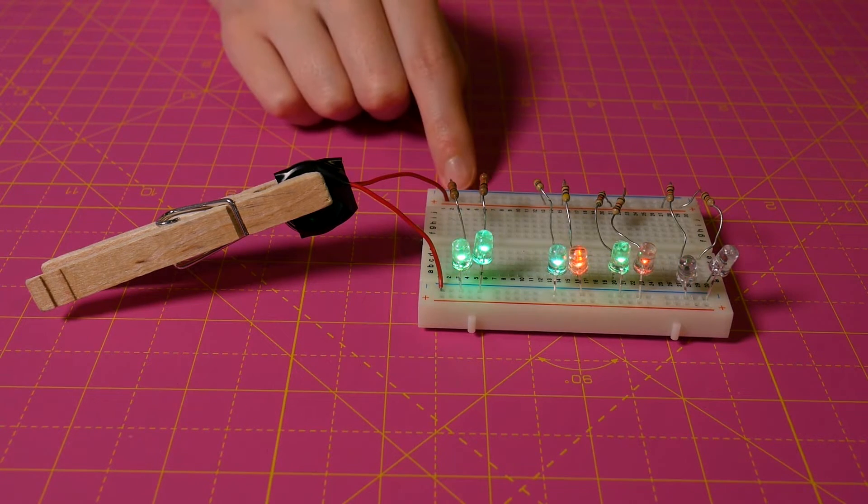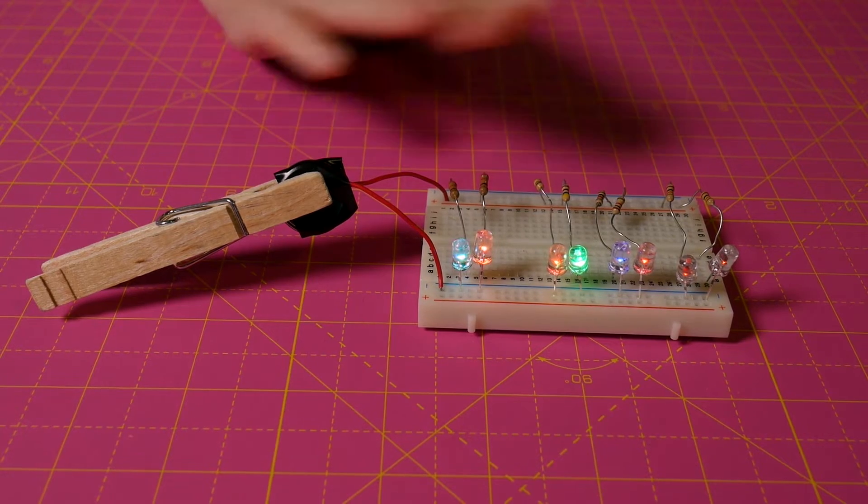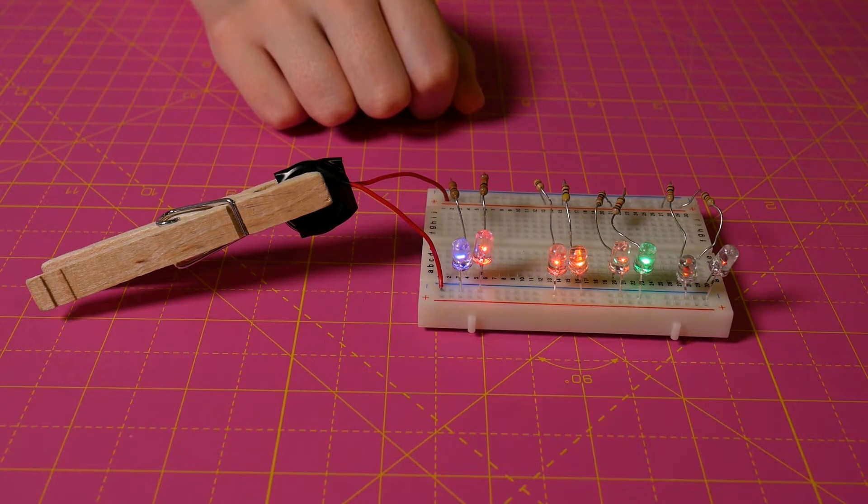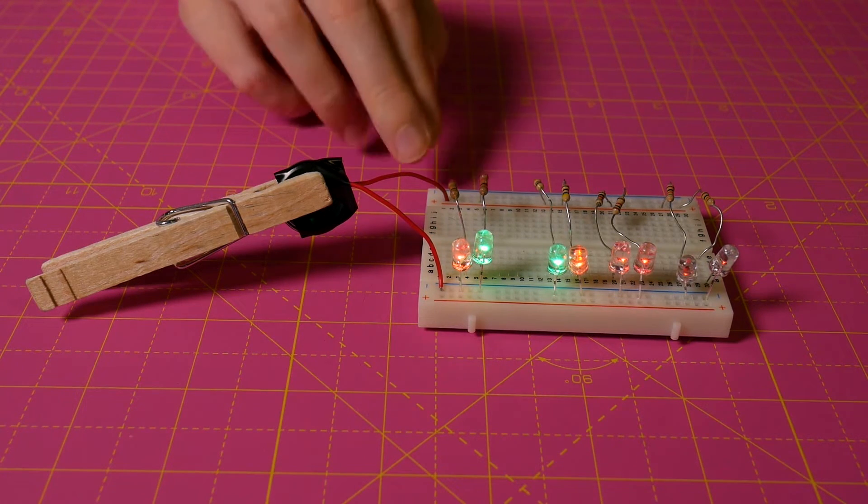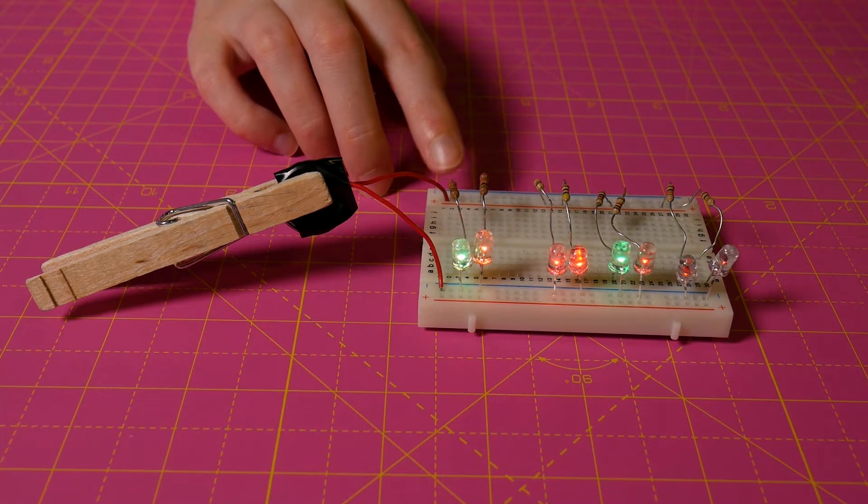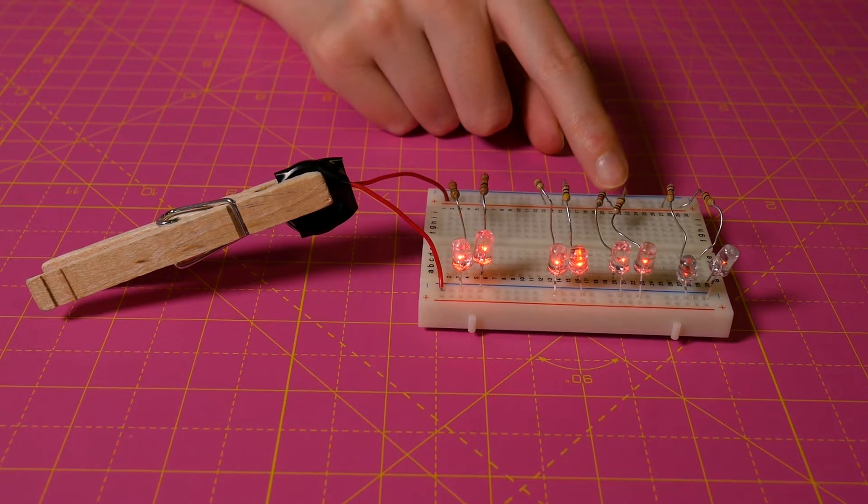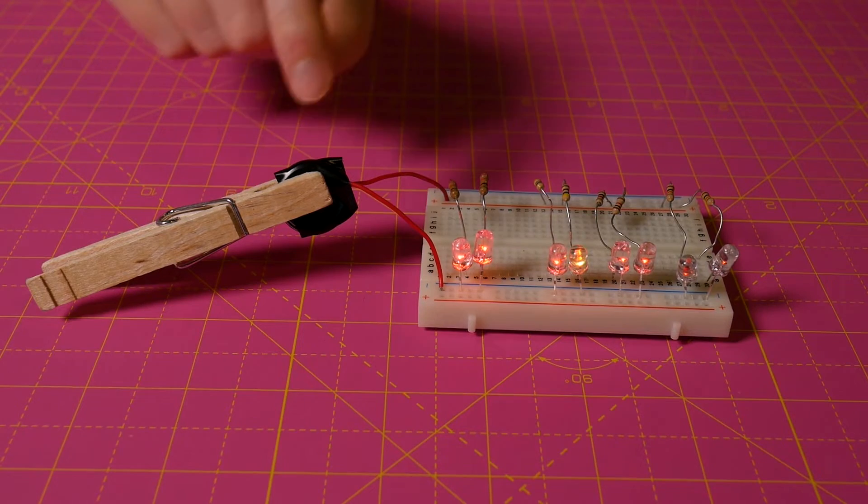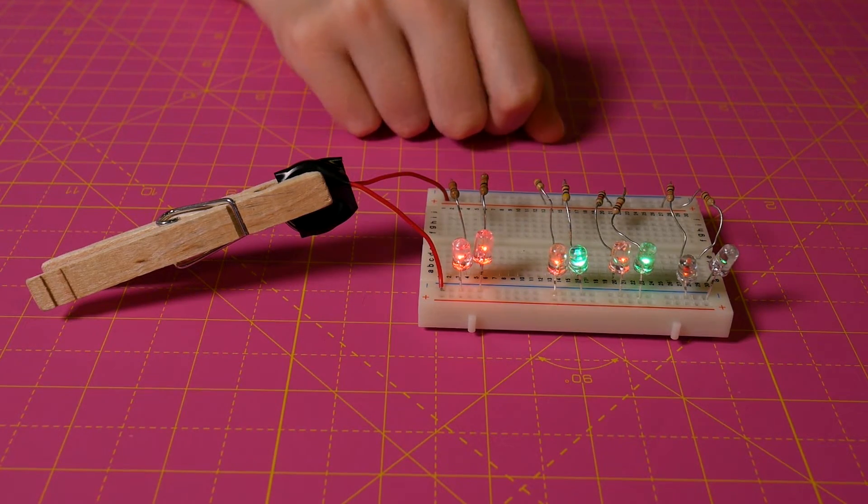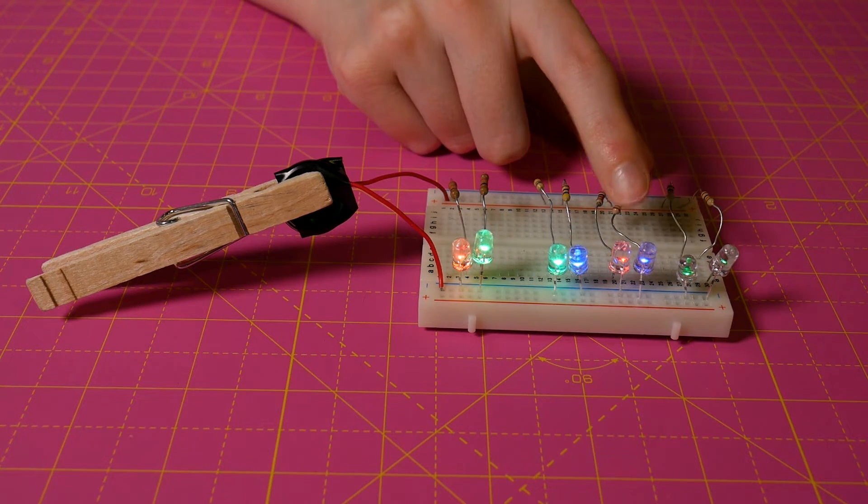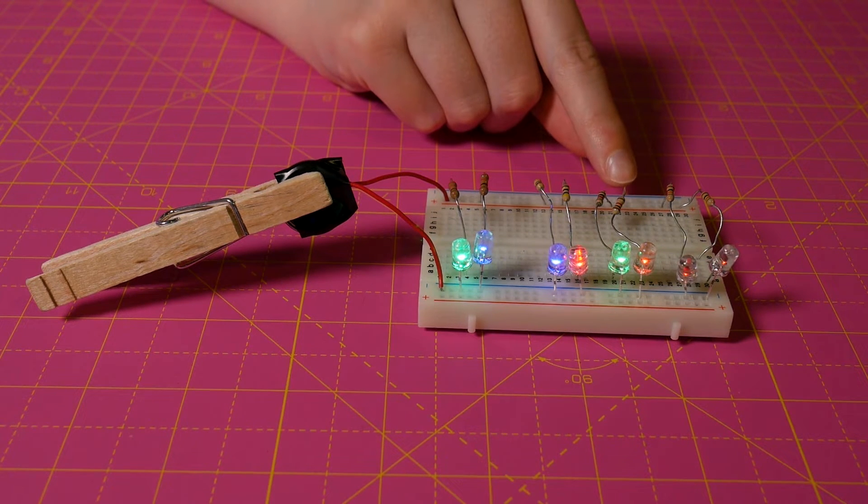You can see obviously right now the 220 ohm looks the best - you're getting that PWM, those in-between hues as it changes color. 470 we're getting a little bit of that but not as much. Once we go up to 1k with a single battery, we aren't getting that PWM, we're just going red to green to blue.